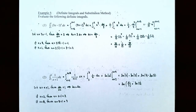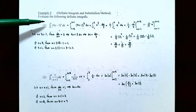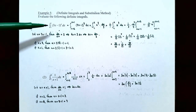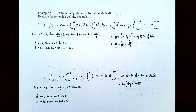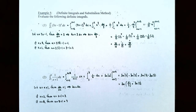In example five, we illustrate how to use the substitution method with definite integrals. Evaluate the following definite integral: the definite integral from x equals 0 to x equals 1 of the function (3x minus 1) raised to the fourth power, with variable of integration x. Notice we have a composite function — it's not just x to the fourth power, it's a function being raised to the fourth power — so we need to use the substitution method.